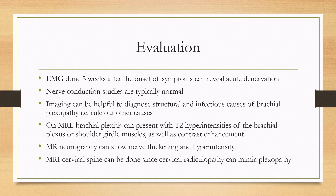Nerve conduction studies are typically normal. Imaging can be helpful to diagnose structural or infectious causes of brachial plexopathy — to look for other causes. On MRI, brachial plexitis can present with T2 hyperintensities of the brachial plexus or shoulder girdle muscles, as well as contrast enhancement.